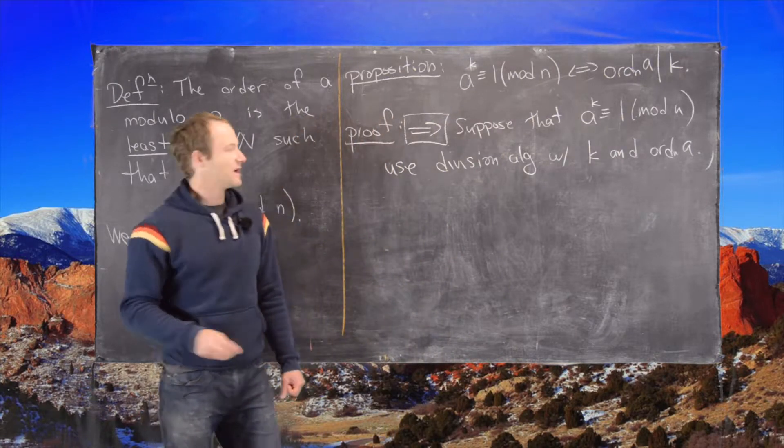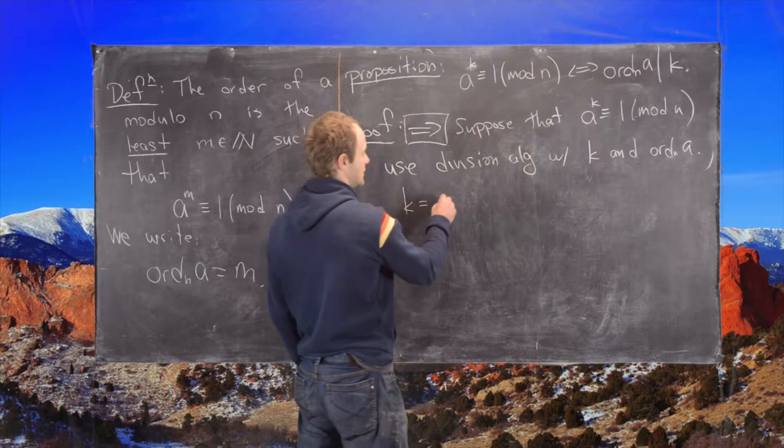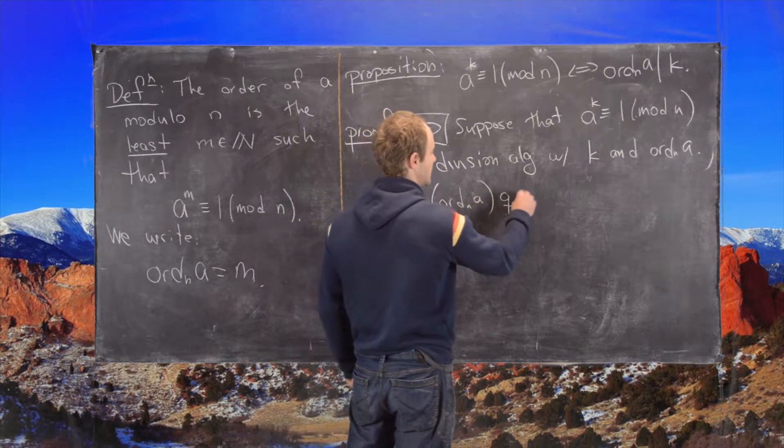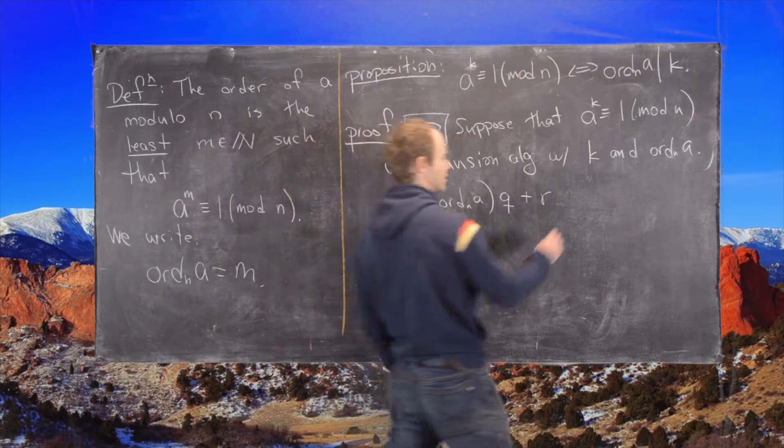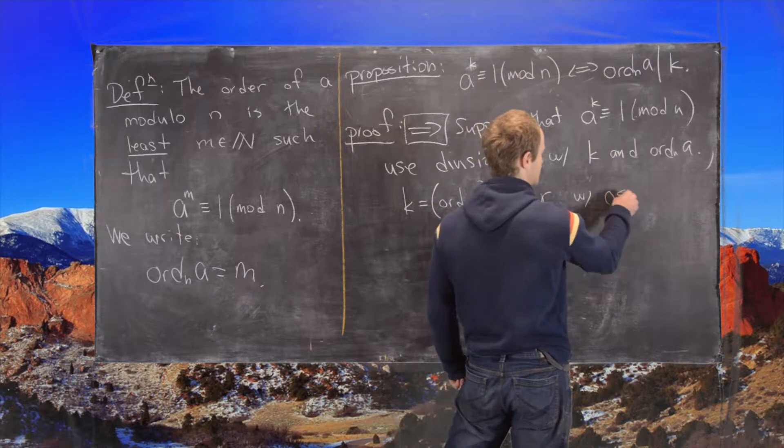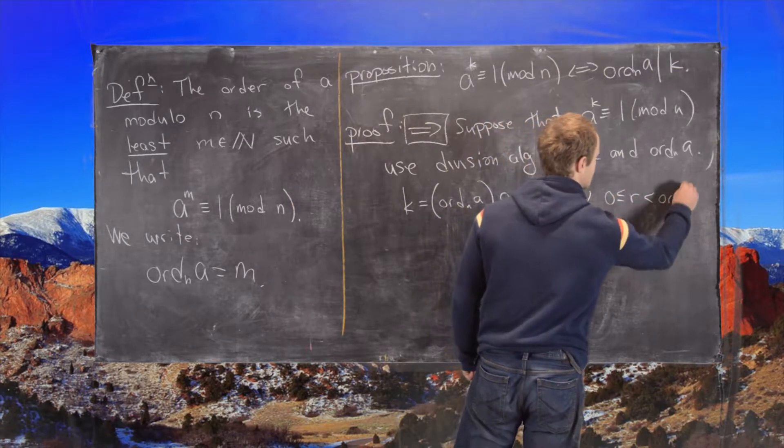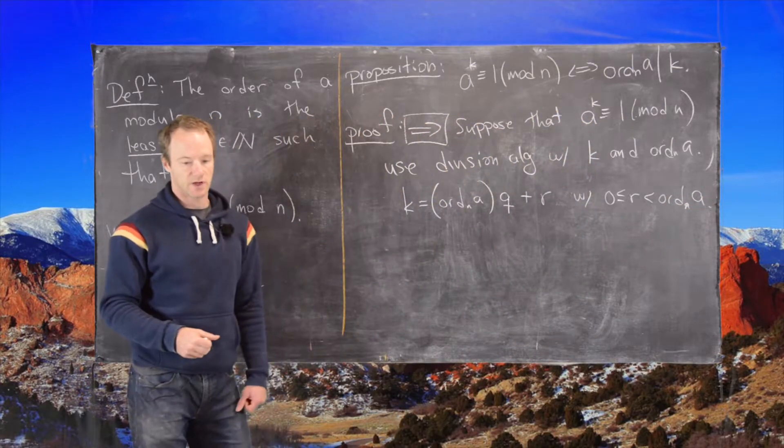And so that allows us to write k equals the order of a times a quotient plus a remainder. And then that remainder is between 0 and the order of a.